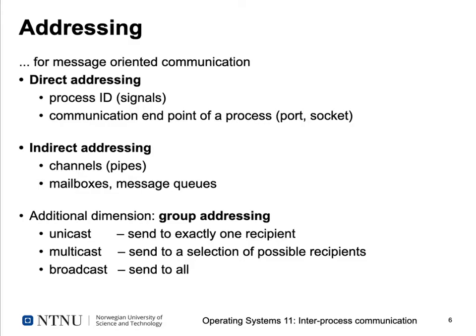More complex addressing is possible if a process has multiple communication channels. A process can have dedicated endpoints called ports or sockets. For example, data on topic A arrives on port X and data on topic B arrives on port Y. We can also use indirect addressing through channels, pipelines, pipes, mailboxes, or message queues.